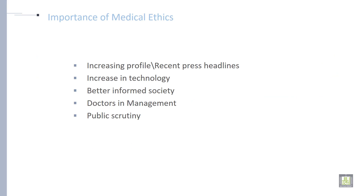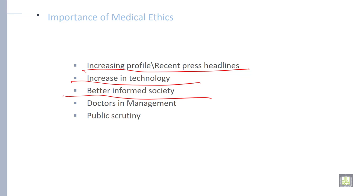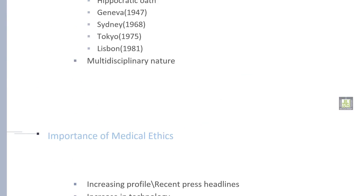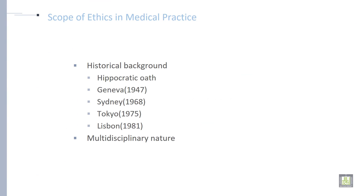What are the importance of medical ethics? Why do we need ethics in medical sciences or in applied medical sciences? The reasons are: increasing profile and recent press headlines, increase in technology, better informed society, and doctors in management and public security. These are the five important reasons why we need medical ethics in medical sciences.